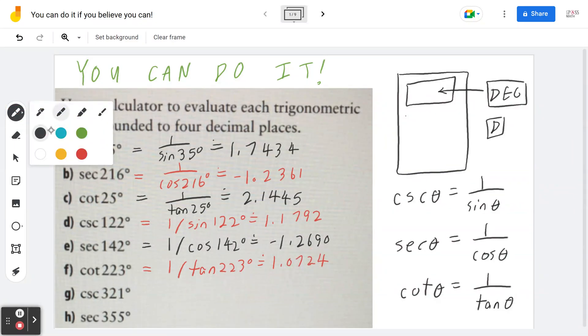Second to last example, if I take cosecant of 321 degrees, this is 1 divided by sine of 321 degrees, which is approximately negative 1.5890.